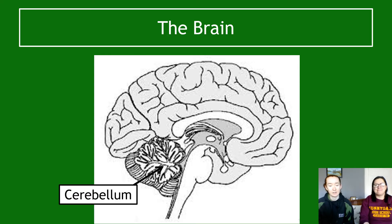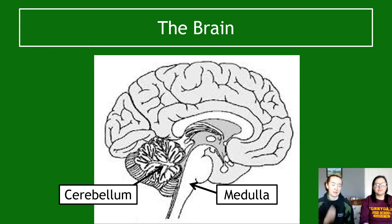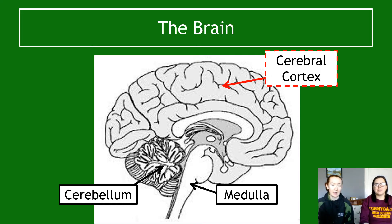In terms of the structure of the brain, the little bit that looks almost like a bit of cauliflower at the bottom back of your head is the cerebellum. The middle bit, basically the top of your spinal cord — your brainstem — is your medulla; that's a really important bit. And then the top bit is called the cerebrum.